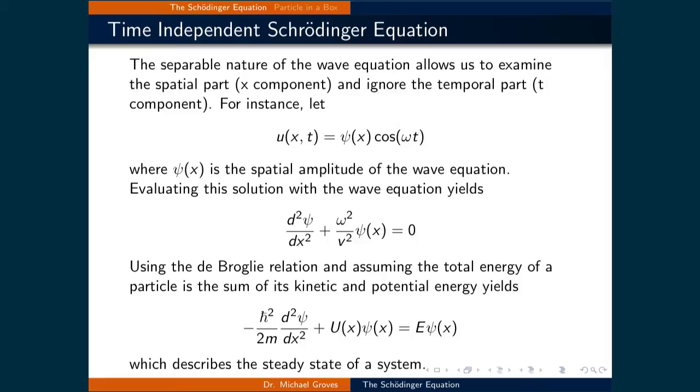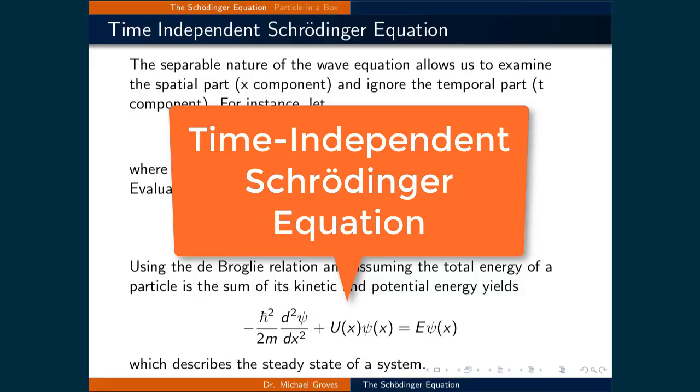If we plug this into the wave equation, then the time part can be multiplied out and we are left with d squared psi by dx squared plus omega squared over v squared psi(x) equals zero. Using the de Broglie relation and assuming the total energy of a particle is the sum of its kinetic and potential energy yields negative h bar squared divided by 2m times d squared psi by dx squared plus U(x) psi(x) is equal to E psi(x).